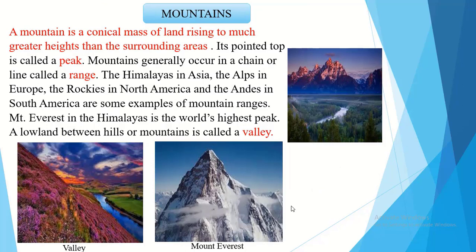Major types of landforms — that is, mountains. A mountain is a conical mass of land rising to much greater heights than the surrounding areas. Its pointed top is called a peak. Mountains generally occur in a chain or line called a range.